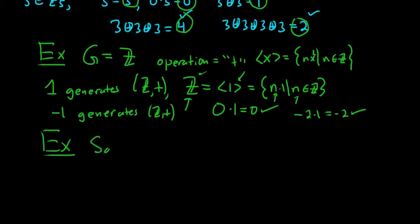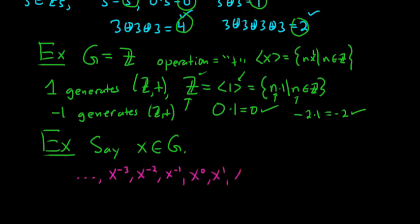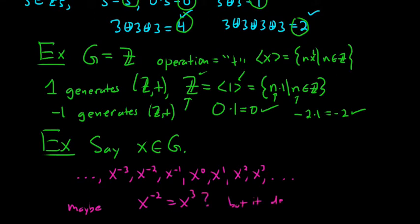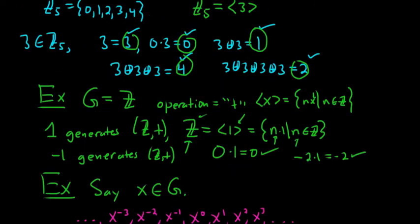Something to consider: if you have x in g, what do the powers of x look like? You have infinitely many powers: x to the negative 3, x to the negative 2, x to the negative 1, x to the 0, x to the 1, x to the 2, x to the 3, and so on. Maybe some of these are the same — like x to the negative 2 could equal x to the 3. It depends on g. In a cyclic group, things cycle — hence the name cyclic.